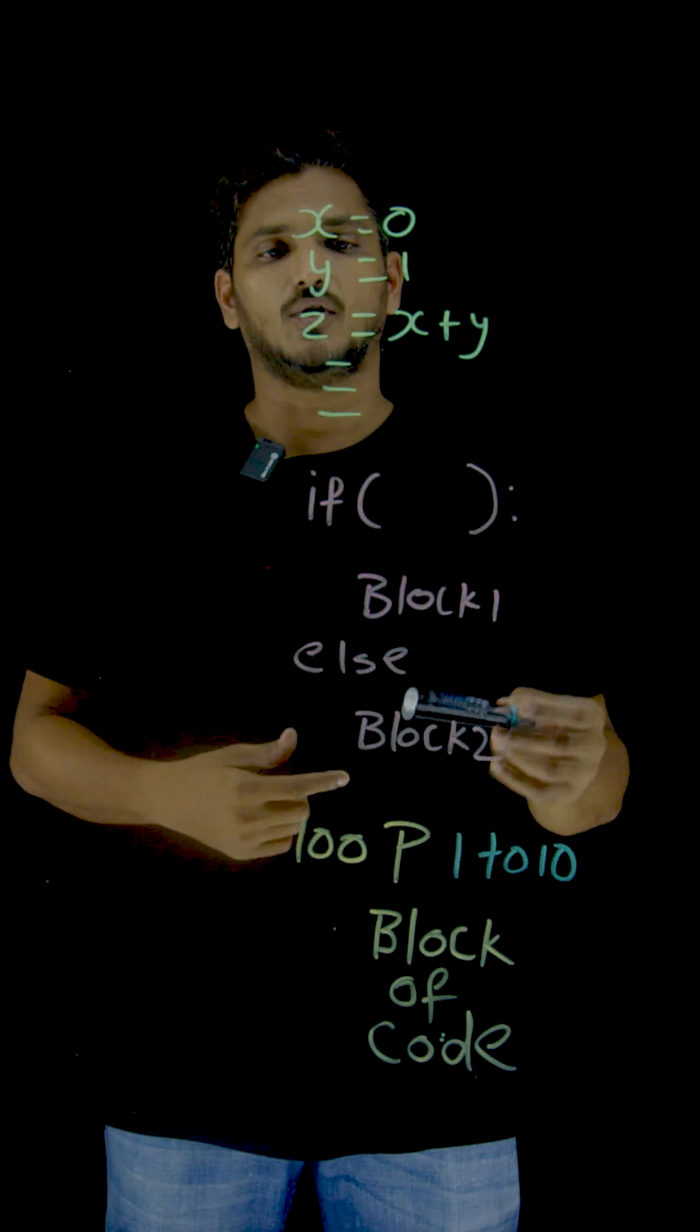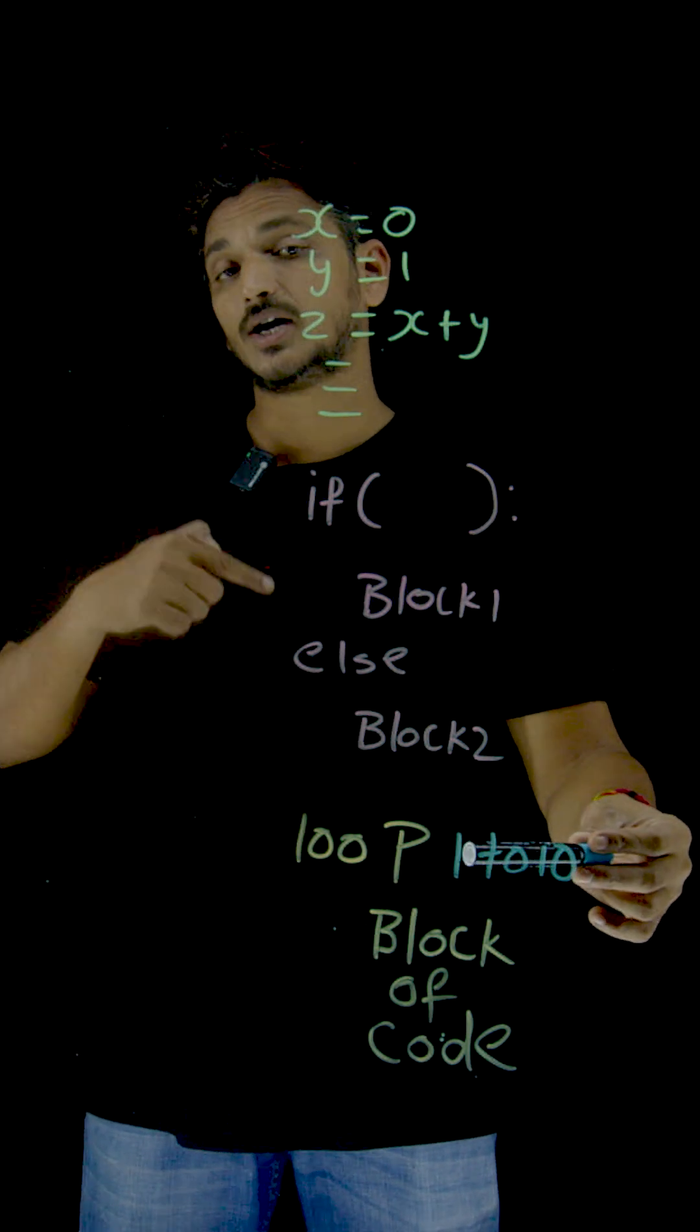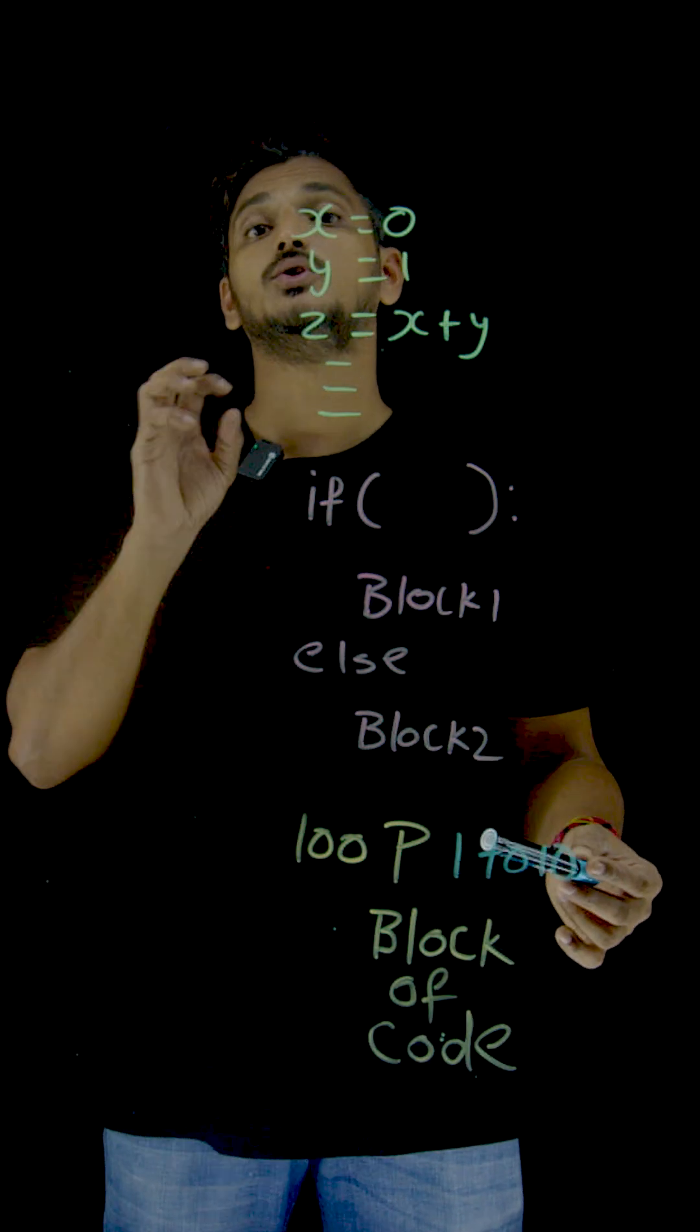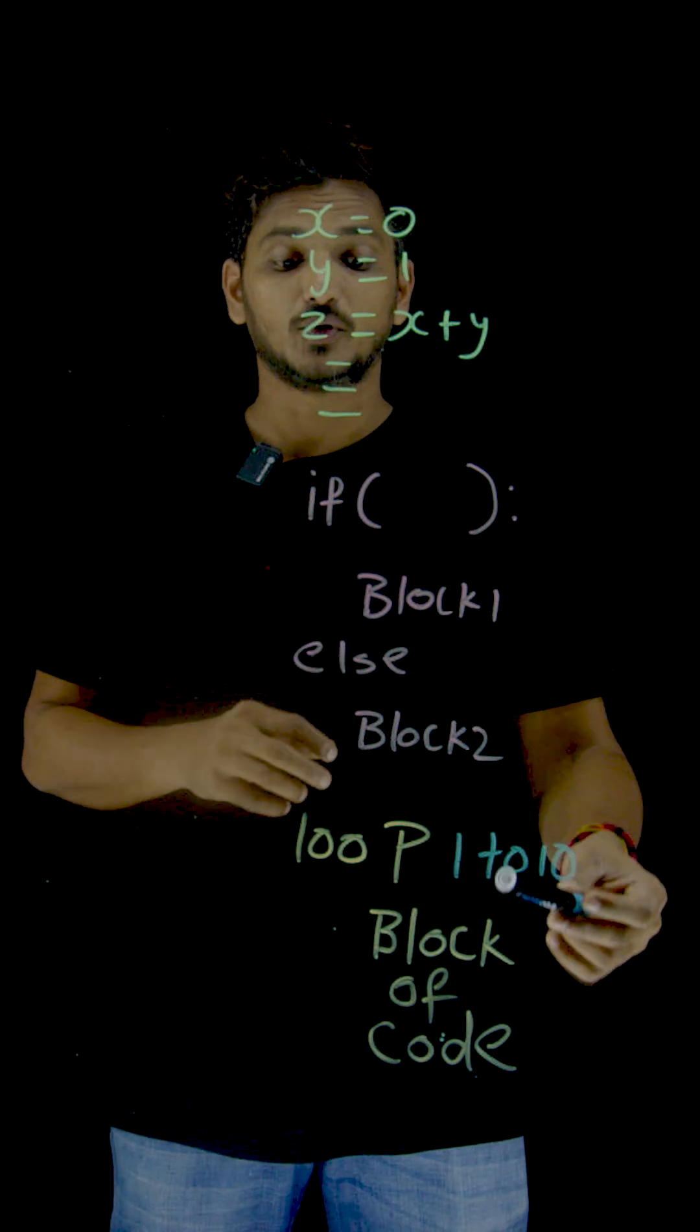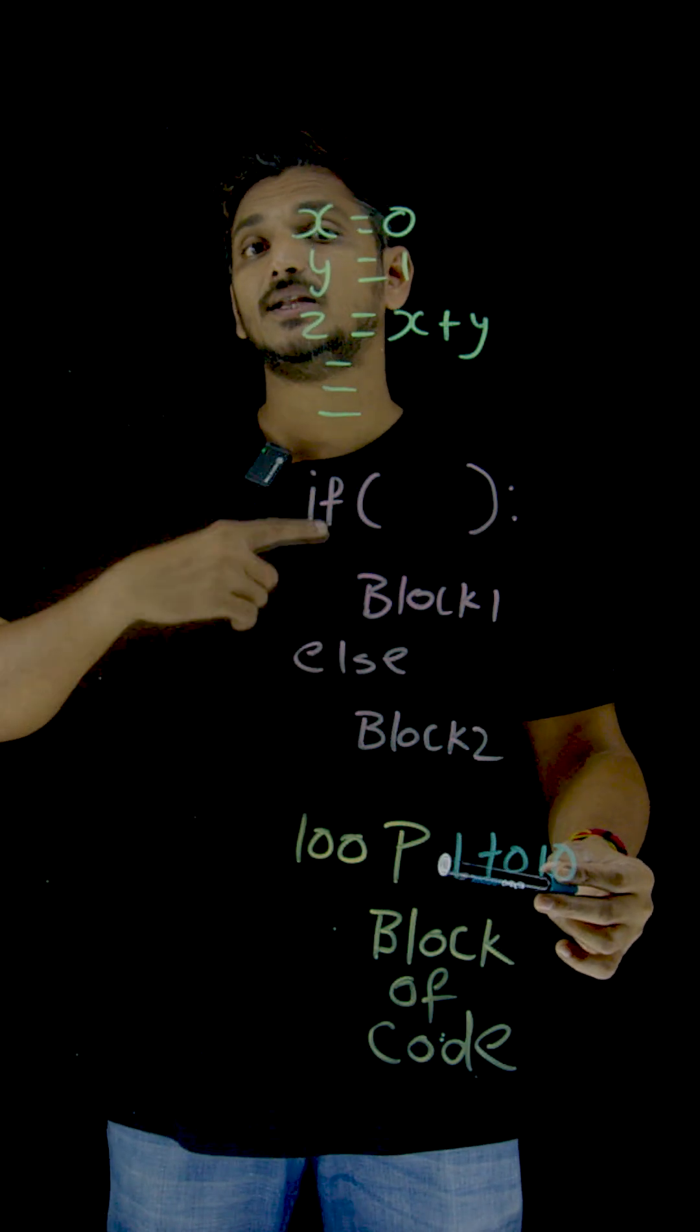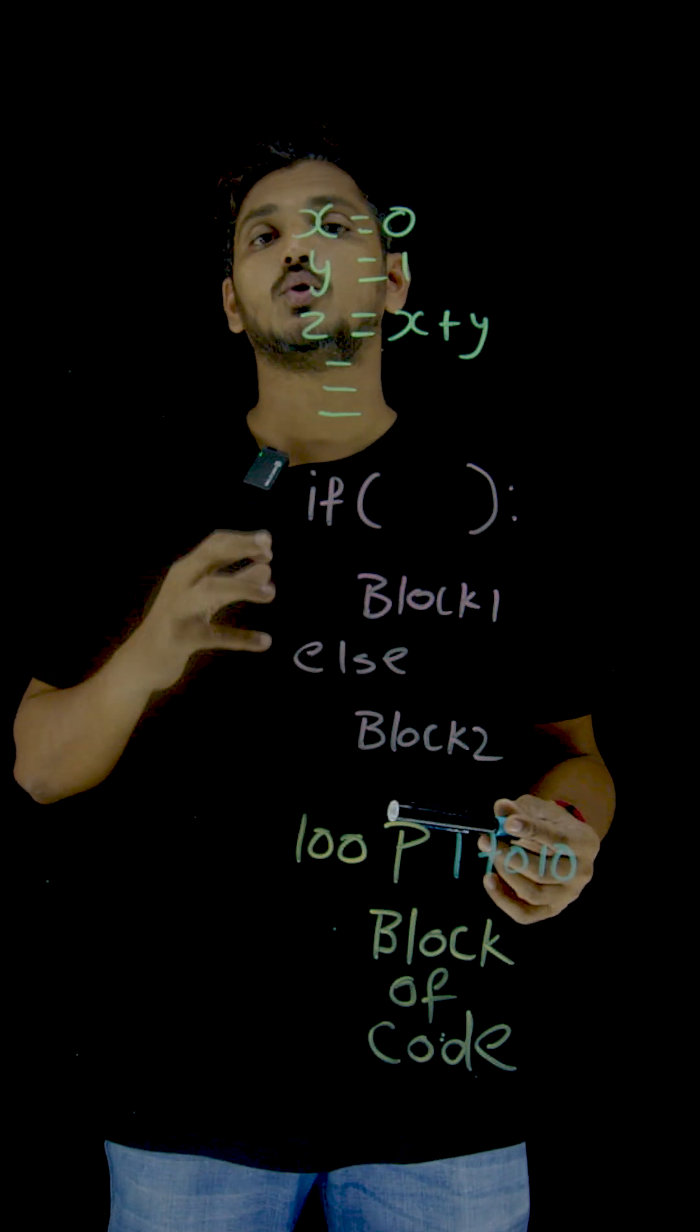Along with these two conditions, we need to understand the third one also. Suppose if you take a block of code, if you want to execute this code multiple times - suppose if you want to execute this code for 10 times - you place it in a loop.